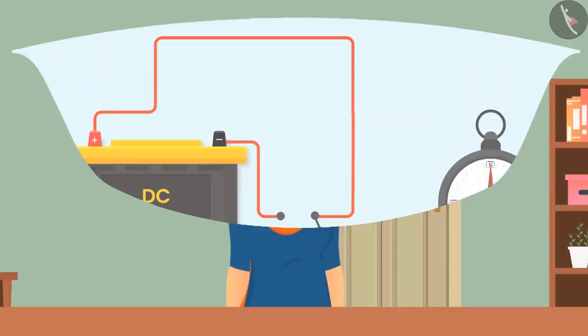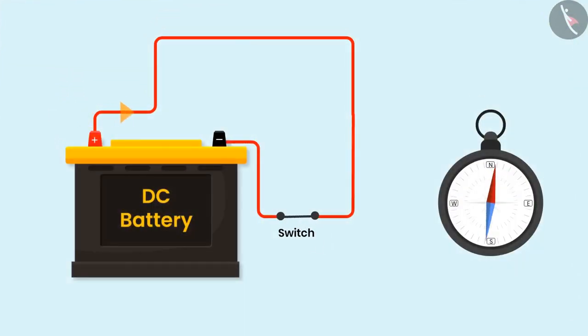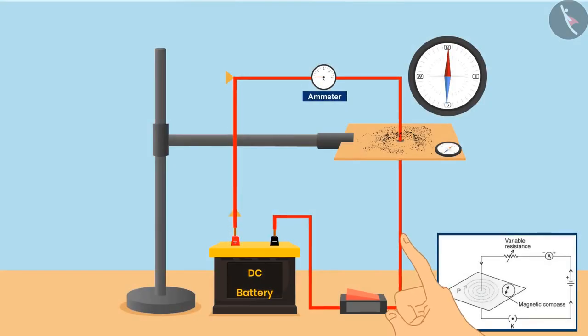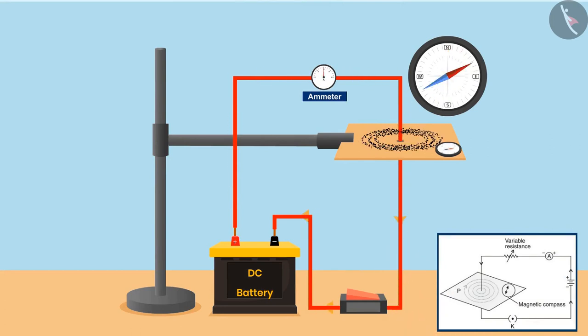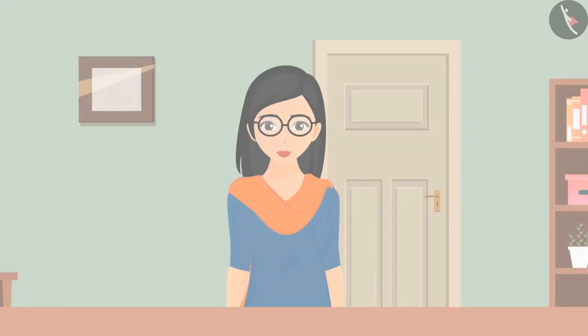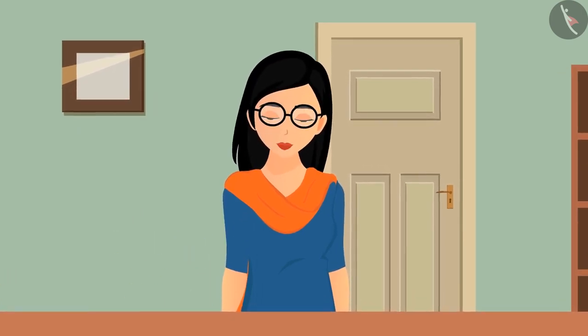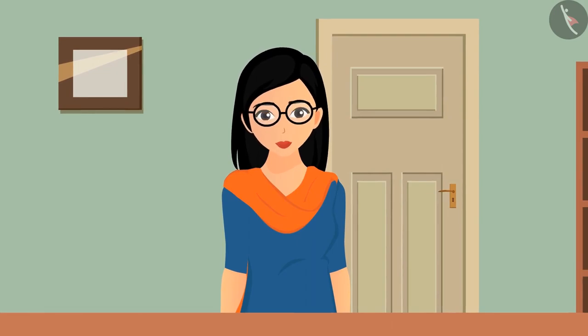Let's summarize what we have learned today. A current carrying conductor acts like a magnet. If the electric current is increased, then the strength of magnetic field lines also increases. The strength of magnetic field lines is directly proportional to the thickness of the current carrying conductor. We will learn about the appliances working on electricity and magnetism in our upcoming videos.